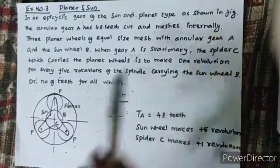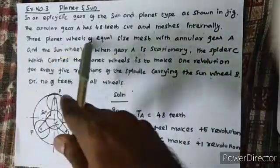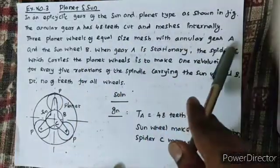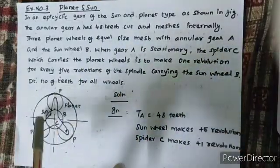So internally is important. Three planet wheels of equal size mesh with annular gear A. We are going to discuss 1, 2, 3 - three planet gears.